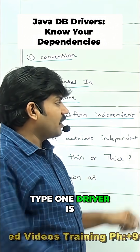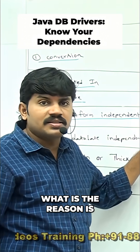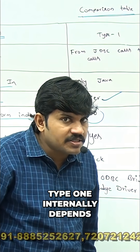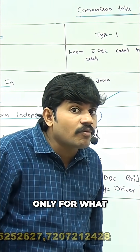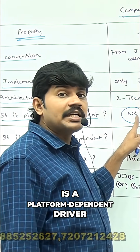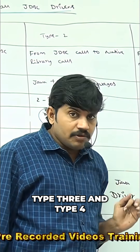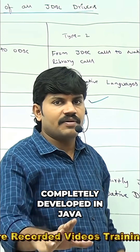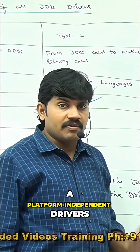Type 1 driver is the platform dependent driver. The reason is that Type 1 internally depends on the ODBC driver, and the ODBC driver concept is applicable only for Windows machines. That's why it is the platform dependent driver. But Type 3 and Type 4 are completely developed in Java, that's why they are platform independent drivers.